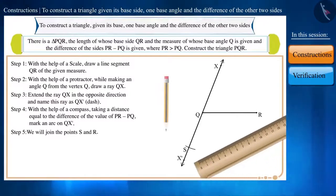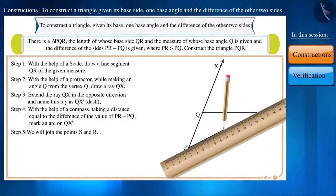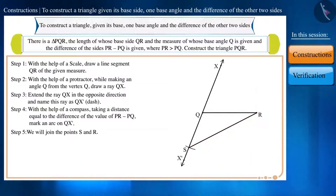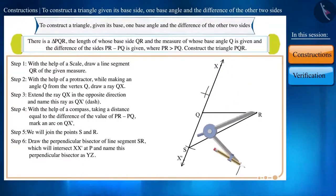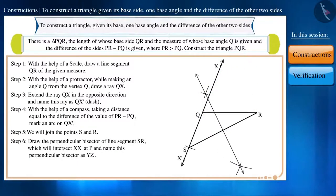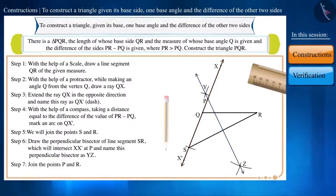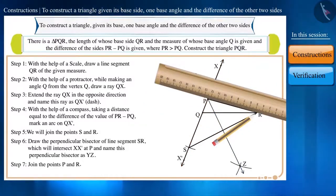Step 5. We will now join the points S and R. Step 6. Draw the perpendicular bisector of line segment SR and we name this perpendicular bisector as YZ. You can see that YZ is intersecting line XX dash at point P. Step 7. Now we will join points P and R.